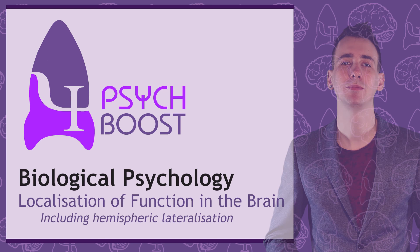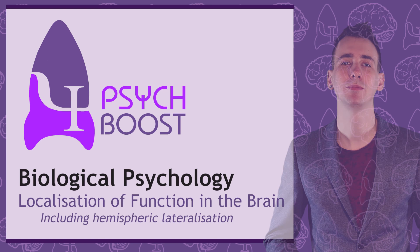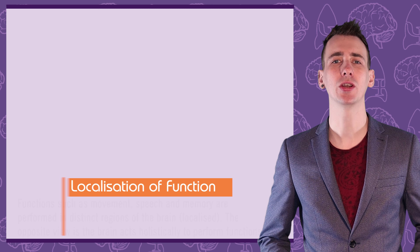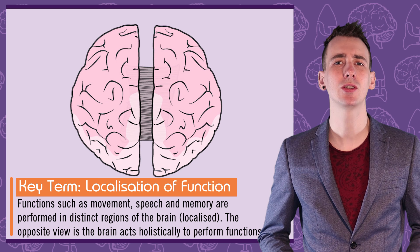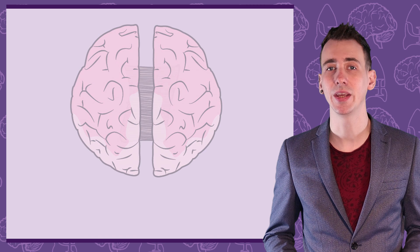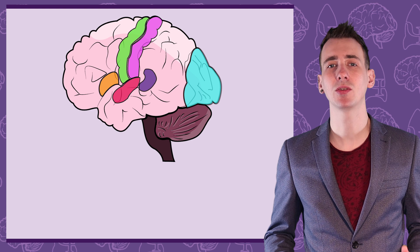In this episode of Psych Boost: localisation of function in the brain. Localisation of function is the idea that the production of behavioural functions — like moving your arm or producing speech — are localised to particular regions of the brain. This is in contrast to a holistic understanding of the brain, in which functions are spread out across large areas, or the entire brain. In this video we are going to explore six regions of the brain that demonstrate localisation of function.